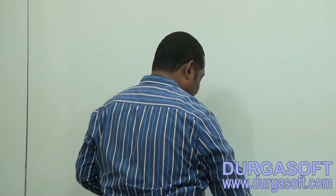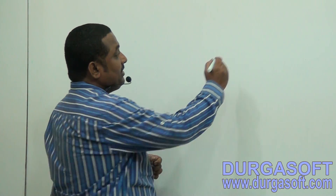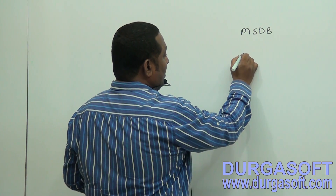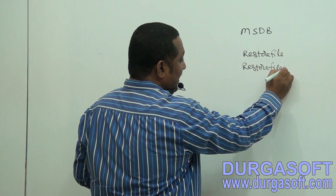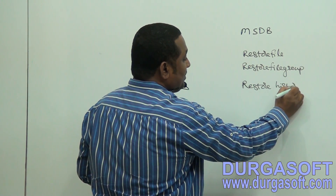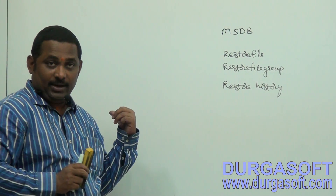When we are performing a restore operation, some information will be generated. For example, Suresh is a DBA, Suresh connected to server, Suresh restored some database — that type of information will be generated, and that information is really important. That information is going to be stored in MSDB, the Microsoft system database. In this database, we have three tables: restore file, restore file group, and restore history. These tables contain information regarding restore operations. Whenever you need information about previous restore operations, you can get the data from these MSDB tables.